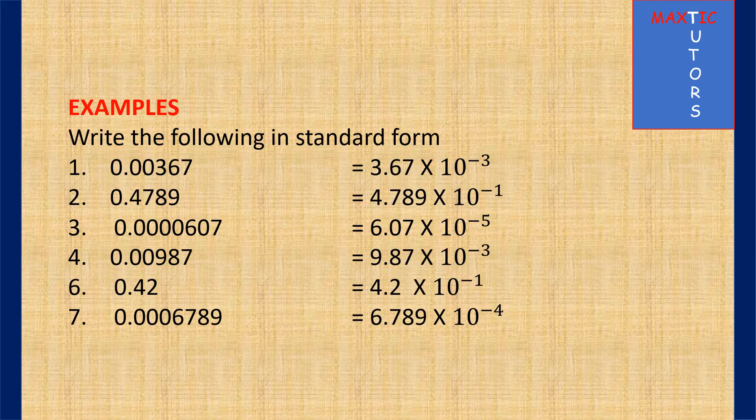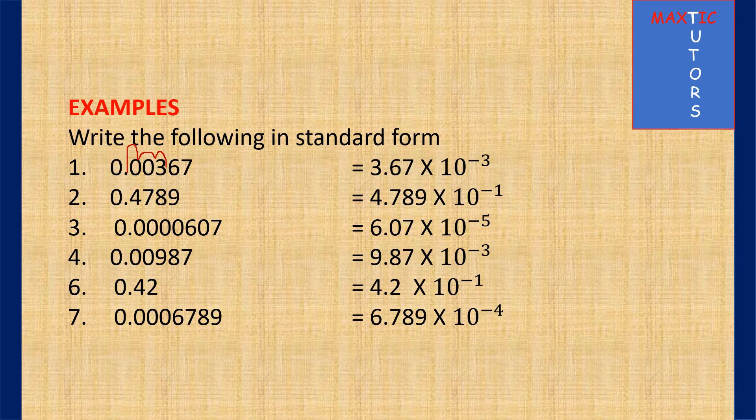From these examples, these numbers are numbers that are less than 1. For you to convert a number to standard form, it has to be a number that is between 1 and 10. When you look at this number, for you to have a number between 1 and 10, that number must be 3.67. We have shifted the decimal 3 times to the right, so you have 10 raised to the power minus 3. The second one, you only need to shift the decimal once to get 4.789, so it is 10 raised to the power minus 1.